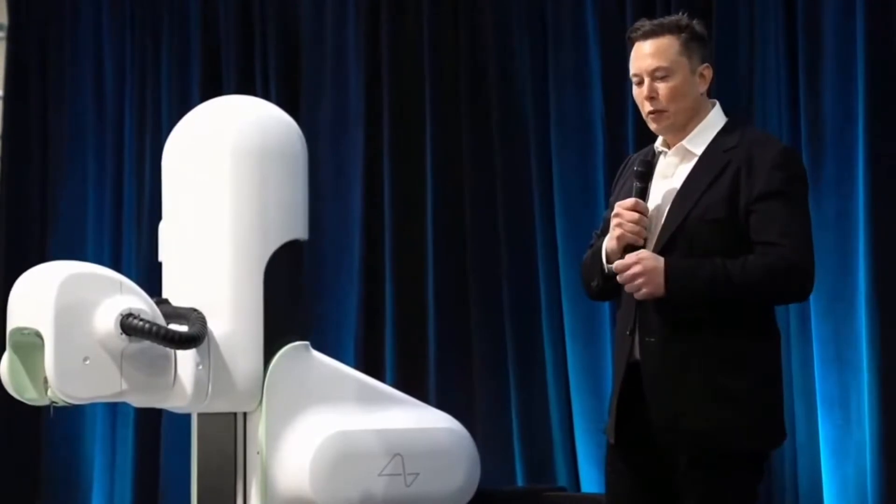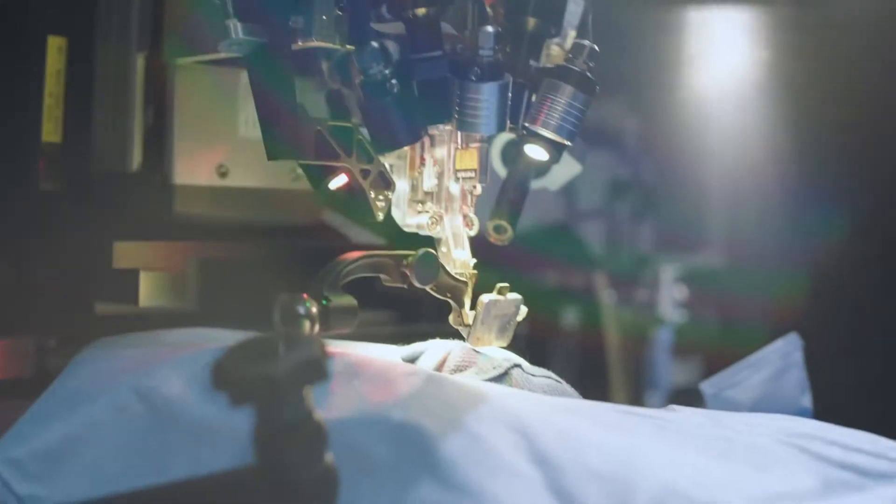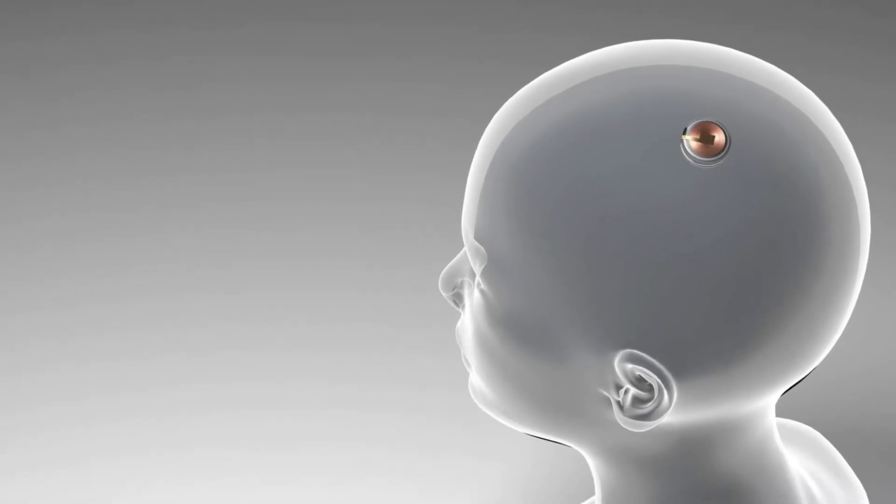Musk described the procedure as follows: a section of the skull is removed, robots are used to put electrodes into the brain, and a gadget is inserted into the hole, leaving only a little scar in the process.